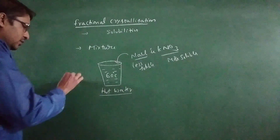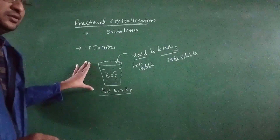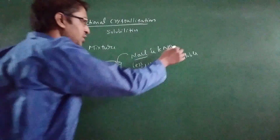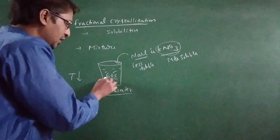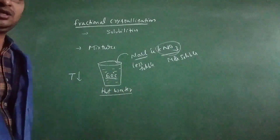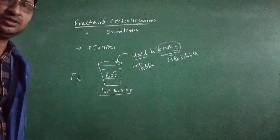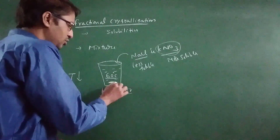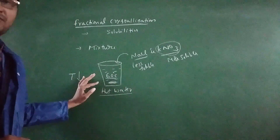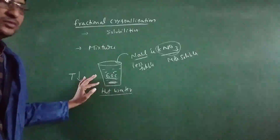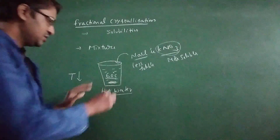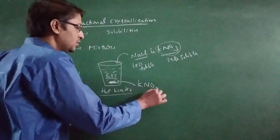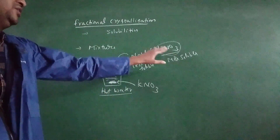After that, we decrease the temperature of the saturated solution. Which one is more soluble at a particular temperature? KNO3 — because it is present in excess amount in the solution. So when we decrease the temperature, crystals of KNO3 are separated from the solution at room temperature. KNO3 is thus separated from the mixture.